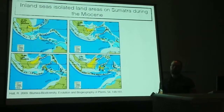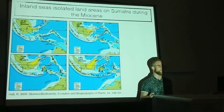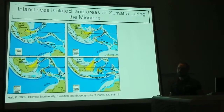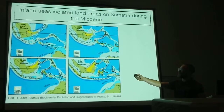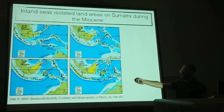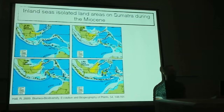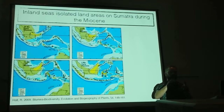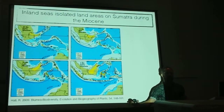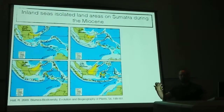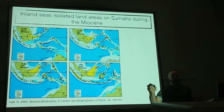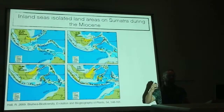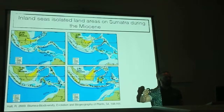In my mind, there are two primary time points in the history of Sumatra that have most greatly influenced diversification, giving us alternative hypotheses to test. Between 20 and 10 million years ago, most of Sumatra was underwater — there were inland seas covering most of the island, and what would have remained were micro-islands that were mountain tops. Any species distributed across Sumatra during that 10 million year time period would have been isolated into these fragmented mountaintop habitats that remained wet and tropical but wouldn't have allowed dispersal between them.